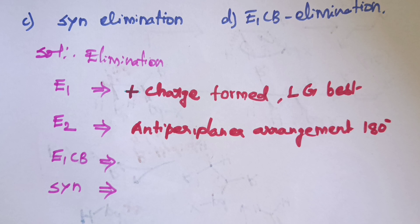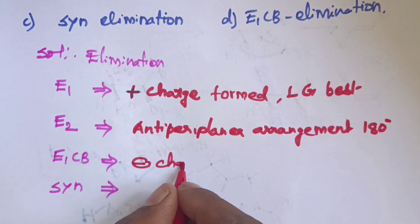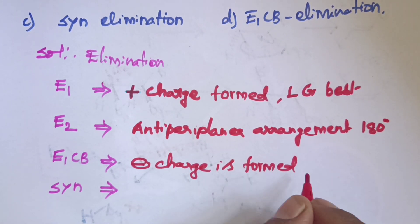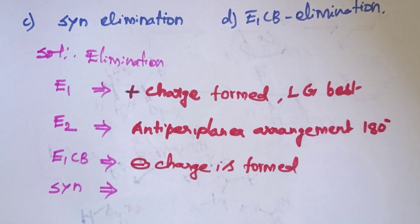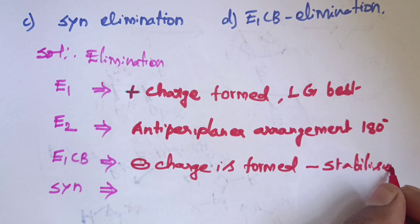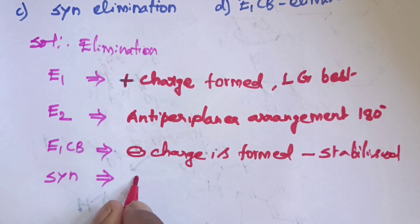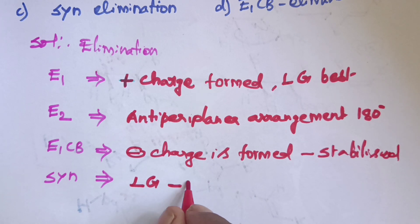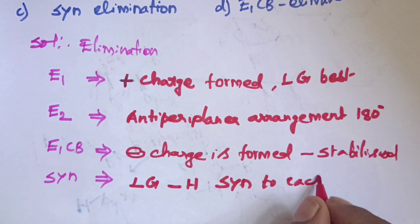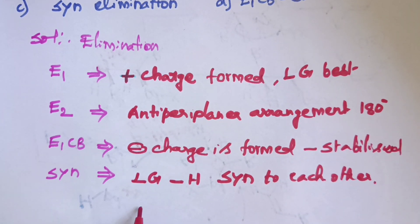E1CB elimination reaction: a negative charge is formed first, the carbanion is stabilized, and then the leaving group leaves. Next, syn elimination — the leaving group and proton are syn to each other.